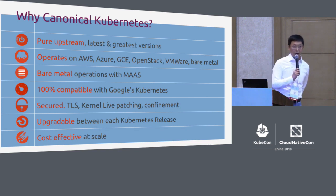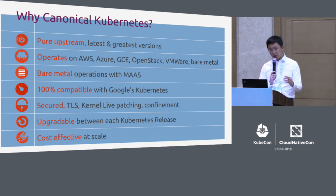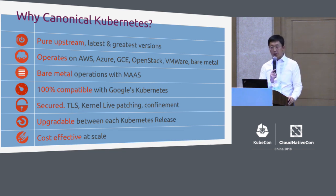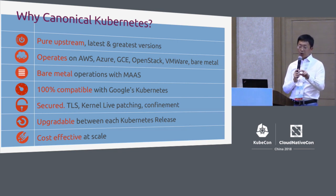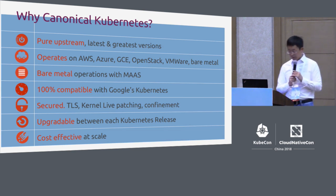To summarize CDK's advantages: first, you can get a true upstream Kubernetes and also get Canonical cooperation, support, and operations maintenance. The latest version of Kubernetes can be used and it is 100% compatible with Kubernetes. CDK is also a Kubernetes distribution with K8s charms from Canonical at the backend, so it can be quickly deployed and very easily managed and maintained.